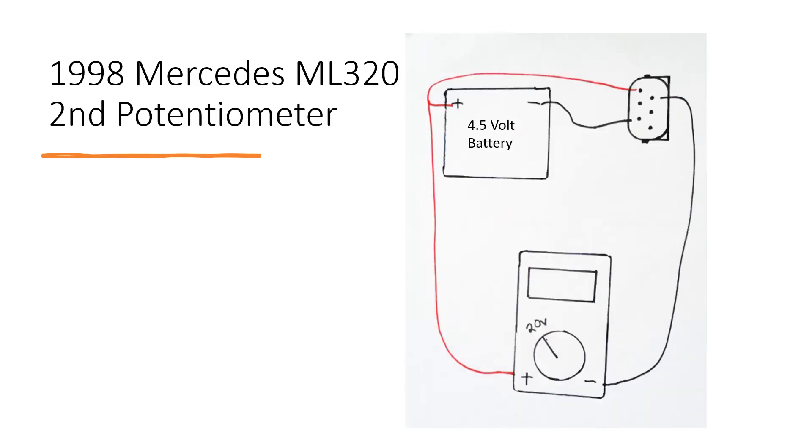For the second potentiometer, the multimeter is still going to be set at 20 volts just like this. The positive from the battery and the multimeter will connect to this top left pin just like this.